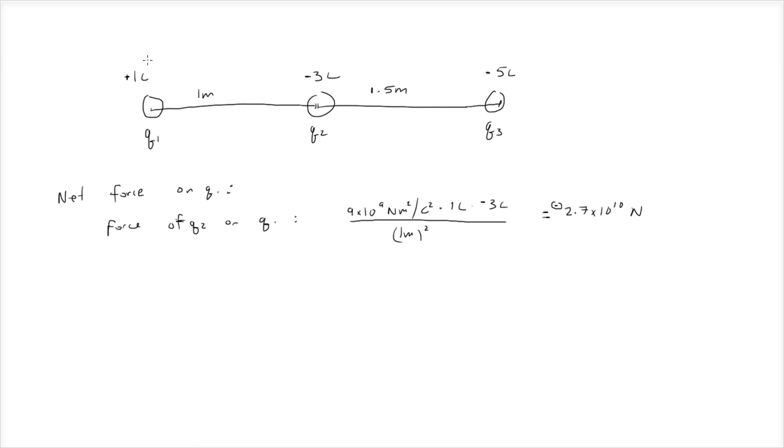We know they're being attracted, q1 and q2 are attracted to each other. So I'll draw an arrow going towards q2 and write the force up here: 2.7 times 10 to the 10 newtons.